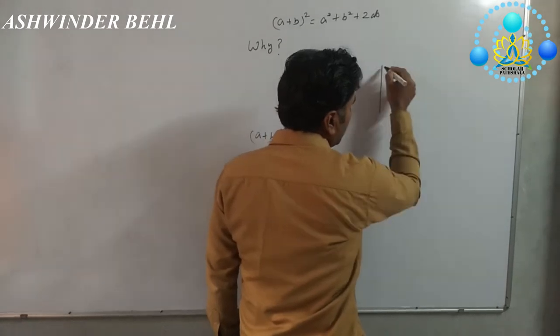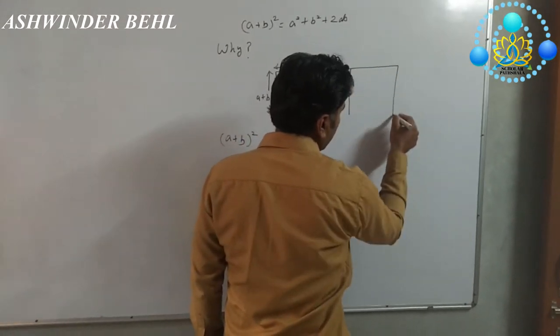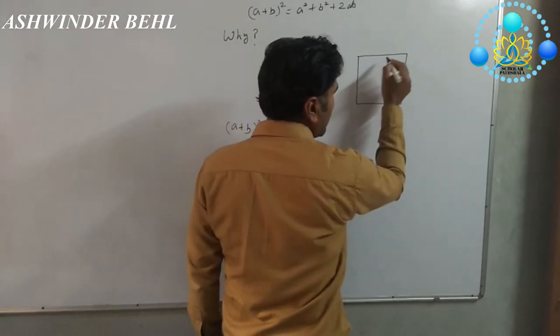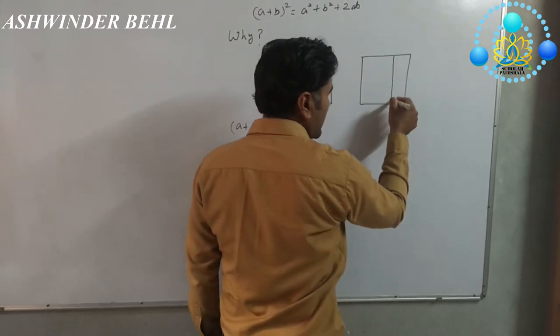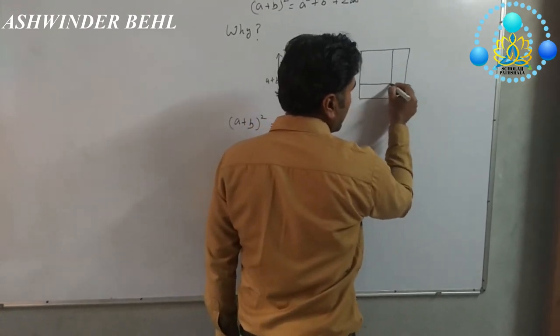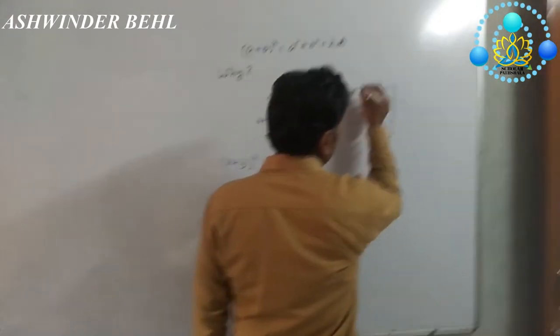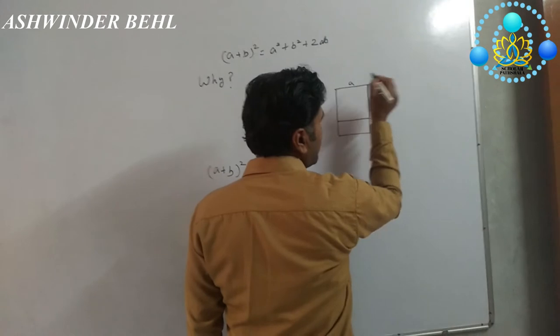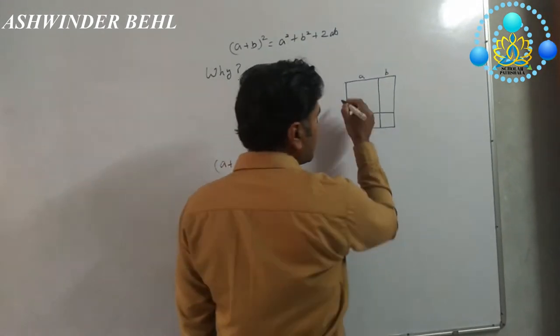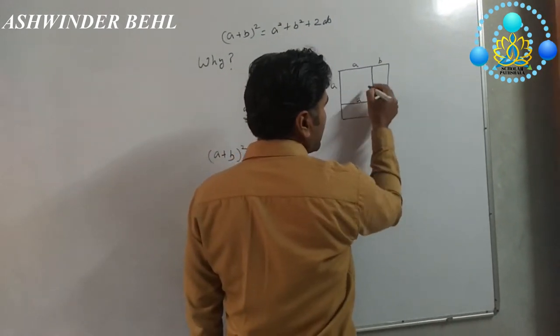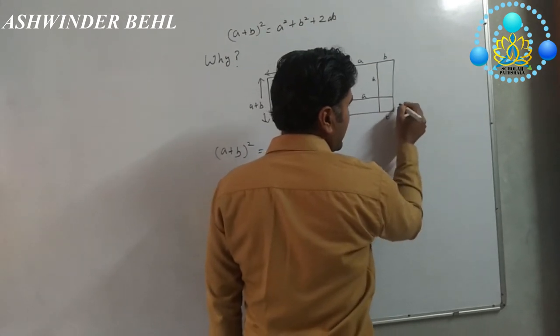Now we will take the same square. If we cut that square into this way, so that is A and that is B, same as that is A and same as that is B.